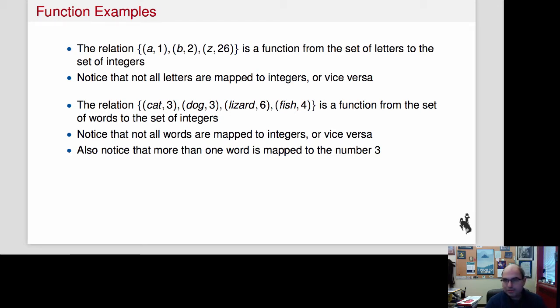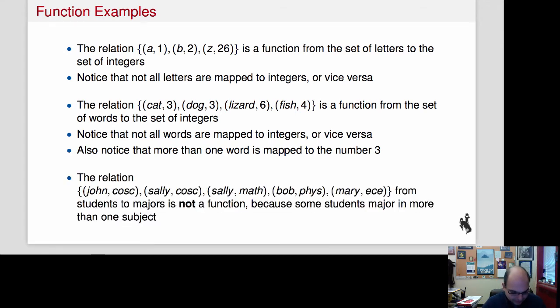There's more than one word that maps to 3. Cat and dog both have 3 letters. But that's okay. What wouldn't be okay is to say cat is 3 and cat is 5 as well. No, we couldn't do that.